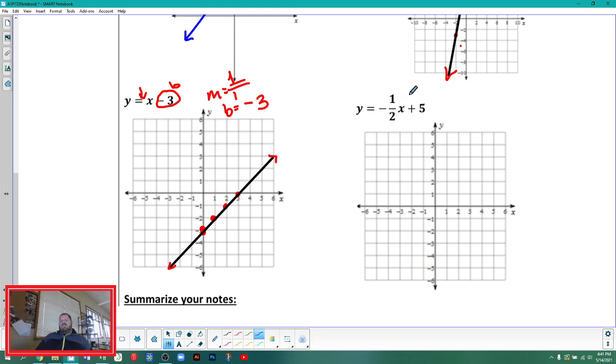Now, the next one, y equals negative 1 half x plus 5. So the slope is negative 1 half, and the y-intercept is 5. Start off at 5, go down 1 over 2, and put another point. And I can do that several times, all the way. The more points I have, the better. The straighter my line is, the better, and I really know what's going on with this line when I draw my line all the way through the graph.